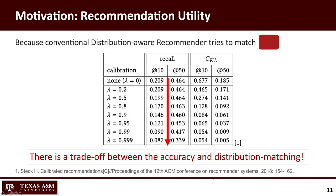As many previous works stated, there is always a trade-off between recommendation utility and distribution matching. As this table shows, when the taste distribution of the recommendation is closer to the target one, the recommendation utility gets worse. Through the previous example, it is easy to guess that the drop in recommendation utility is caused by the taste distortion — if the recommendation system tries to match the result with the wrong distribution, which is far from the ground truth, it will not be accurate.